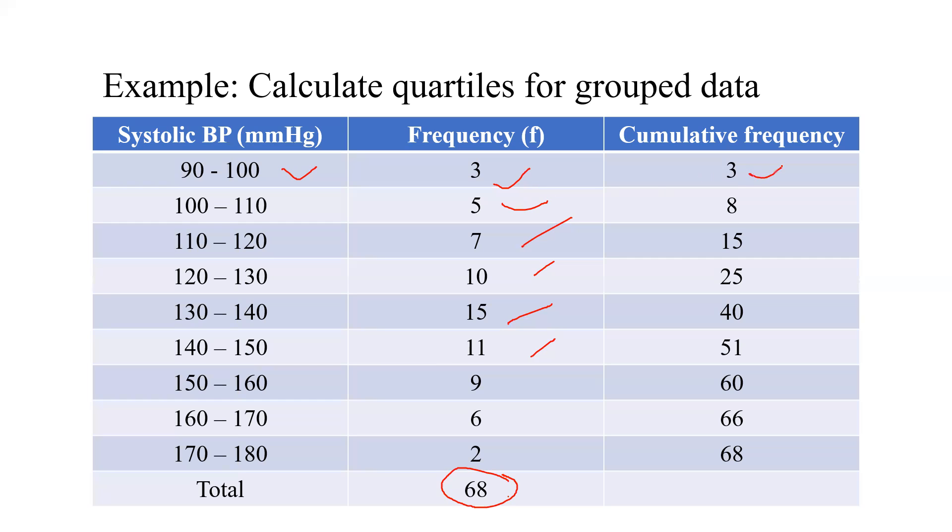So first 3, 3 plus 5 is 8, 8 plus 7 is 15, 15 plus 10 is 25, 25 plus 15 is 40, 40 plus 11 is 51, 51 plus 9 is 60, 60 plus 6 is 66, 66 plus 2 is 68. So now once we have a cumulative frequency column,